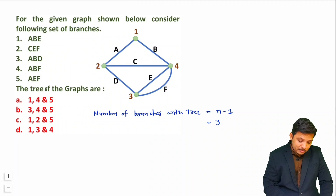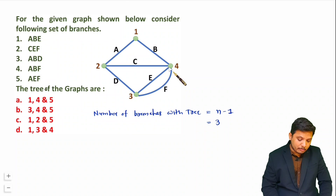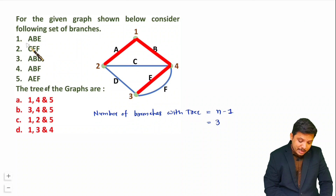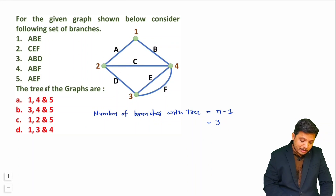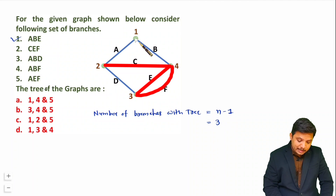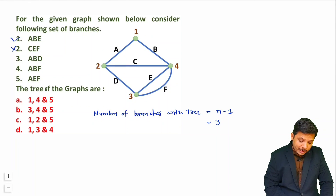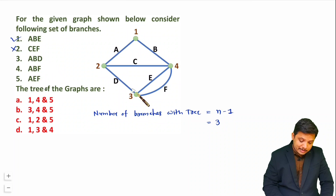To identify trees, a valid tree must cover all nodes and must not form a loop. Option 1 — A, B, E — covers all the nodes and does not form a loop, so this is a tree. Option 2 — C, E, F — does not cover node 1 and also forms a loop, so this is not a tree. Option 3 — A, B, D — covers all the nodes and does not form a loop, so this is also a tree.